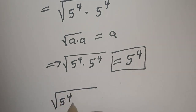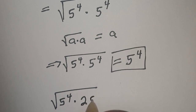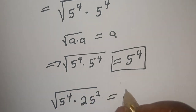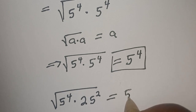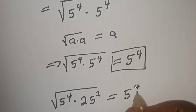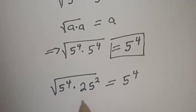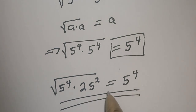Therefore, square root of 5 raised to power 4, multiplied by 25 squared, is equal to 5 raised to power 4. If you enjoyed the class, please don't forget to like, share, comment, and subscribe. Thank you.